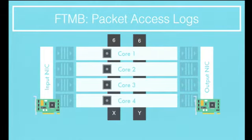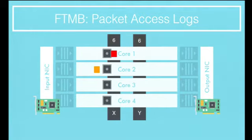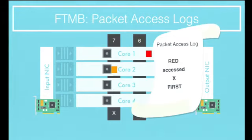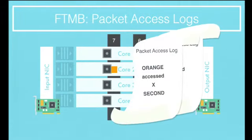Non-determinism arises from data races: packets come in and it's not clear which core gets to variable x first — red or orange. Whoever wins the race updates the variable first. What we need to log in order to replay this event is the order in which each core got to variable x — that's what we record in our packet access logs. We add a counter into the lock that protects that shared state variable; every time a core accesses that lock, it increments the counter and generates one of these records.